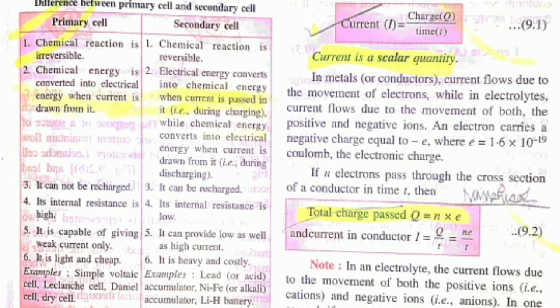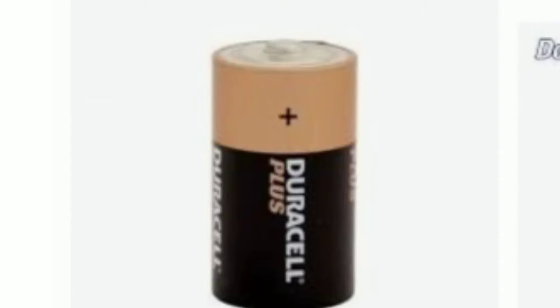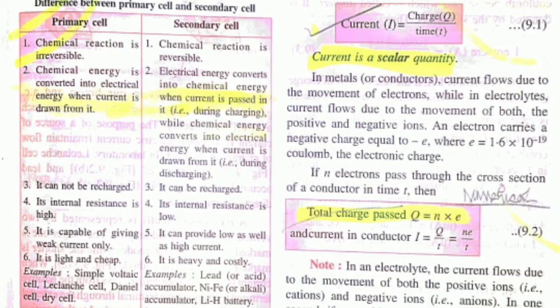For secondary cells, they can be recharged like the cells in motor cars. Examples are very important: primary cell examples are simple voltaic cell, Daniel cell, dry cell - remember dry cell as the Duracell Ultra. Learn this table. Now the main topic starts from here which is in class 10th also.